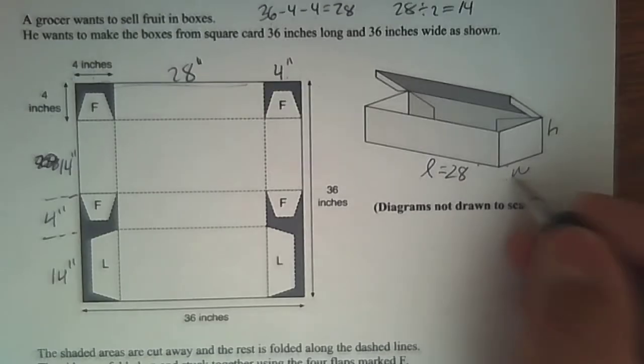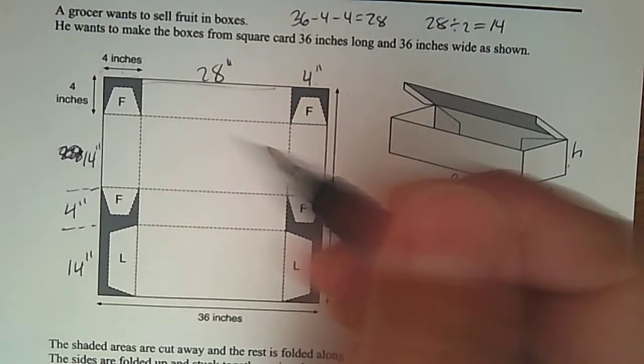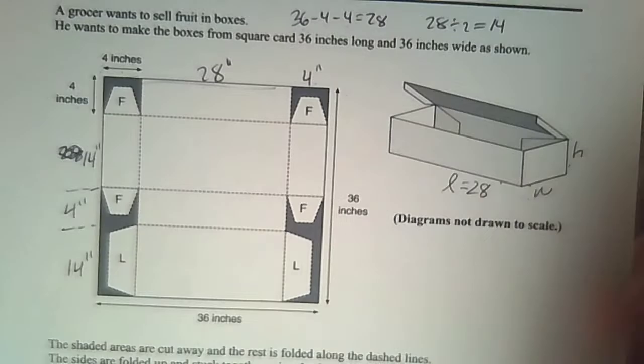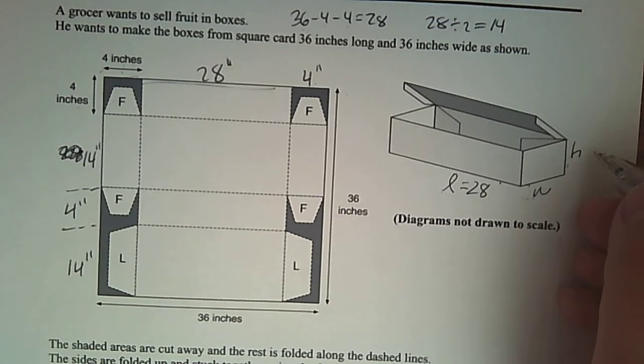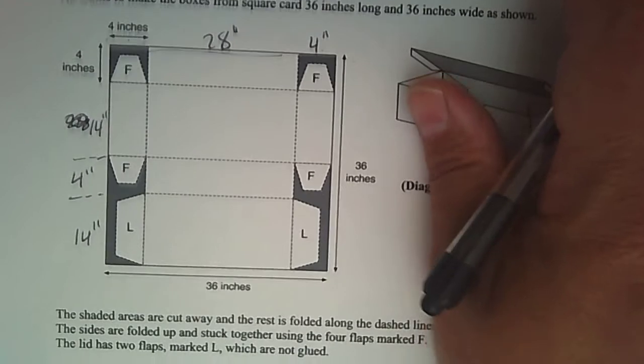The answer is that side there represents the length of the box, which is 28. Then I need to find the other dimensions. So look at four. What will four represent when you look at it? Four is going to represent the height when you fold it up.